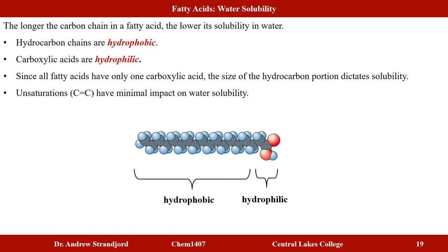Every fatty acid has two sections: the hydrocarbon chain, which is hydrophobic and non-polar, and the carboxylic acid end, which is hydrophilic and polar. Since all fatty acids have one carboxylic acid, the length of the hydrocarbon chain determines water solubility — the longer the chain, the less soluble in water. The presence of double bonds has little impact on water solubility, as they don't significantly change the polarity of the carbon chain.